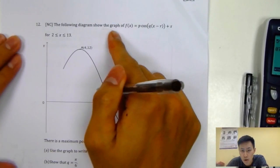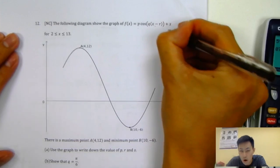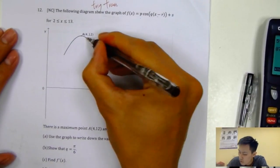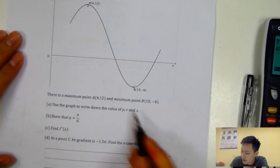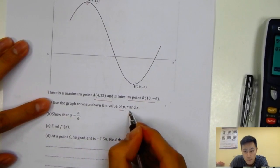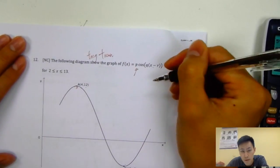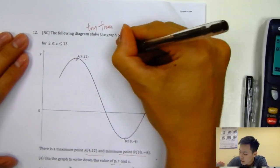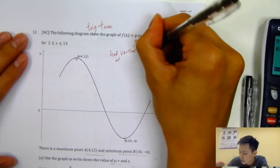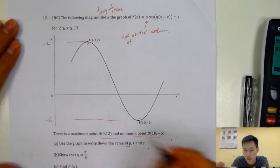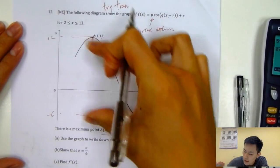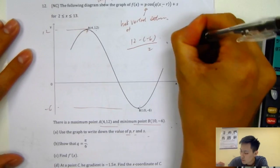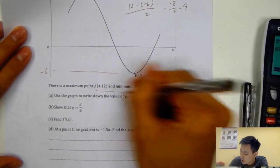The third question: the graph of f(x) = p·cos(q(x minus r)) + s. This is trigonometry transformation. The graph has a maximum of 12 and a minimum of minus 6. We need to find p, r, and s. Outside the bracket affects y, so p is the amplitude — half of the vertical distance: (12 minus (minus 6)) divided by 2 = 18 over 2 = 9. So p equals 9.